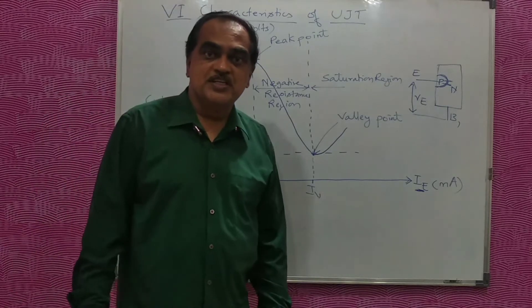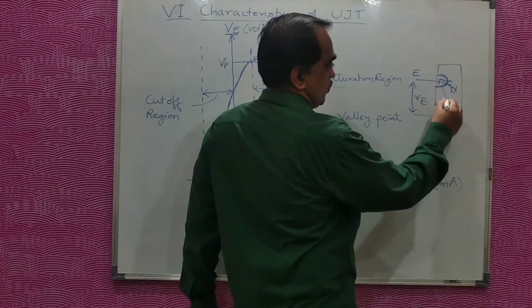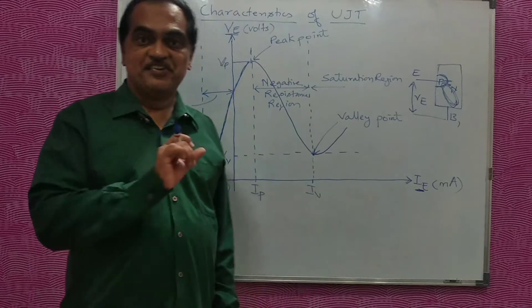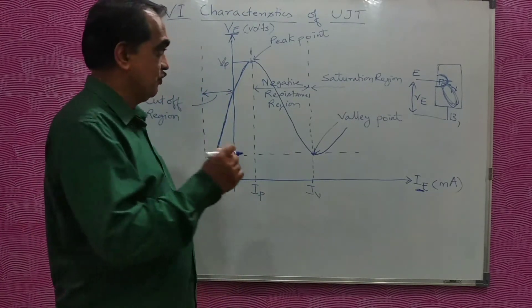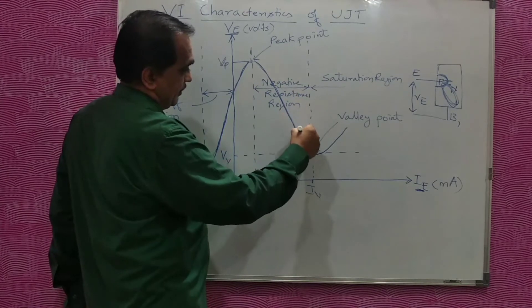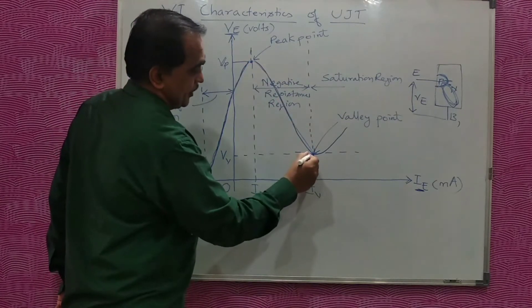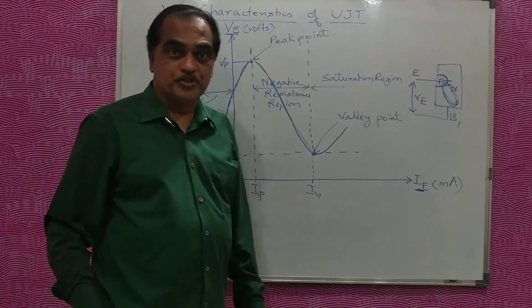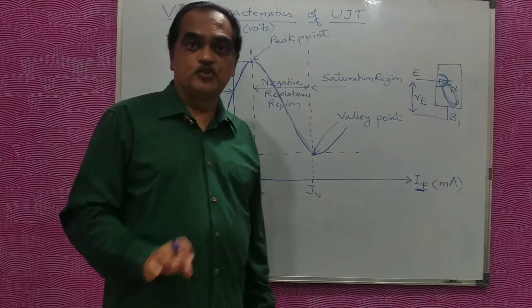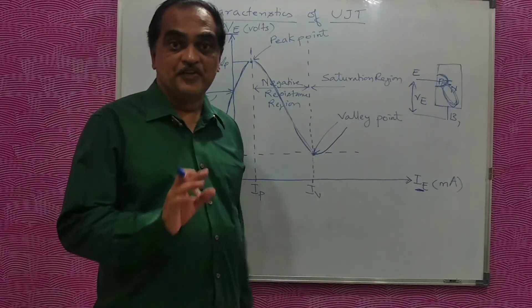Once the peak voltage is reached and the UJT starts conducting, current starts flowing, and the resistance between base 1 and emitter will decrease, causing the voltage across the device to also decrease. Here, the current axis shows current increasing, but the voltage axis shows voltage decreasing — from the peak point it comes to a valley point. Current is increasing while voltage is decreasing, which is inverse to Ohm's law, and therefore this is called a negative resistance region.